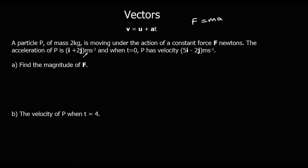So we've got a particle of mass 2kg, under the action of a force f. We've got acceleration is i plus 2j, and when t is 0 — so at the start — the velocity, so the initial velocity, is 5i minus 2j.